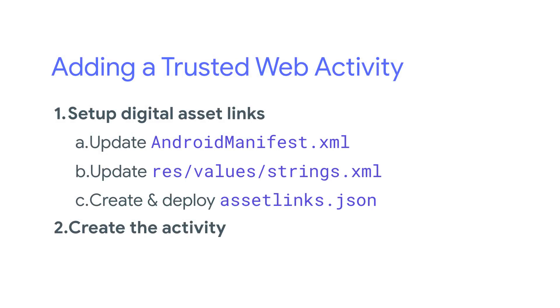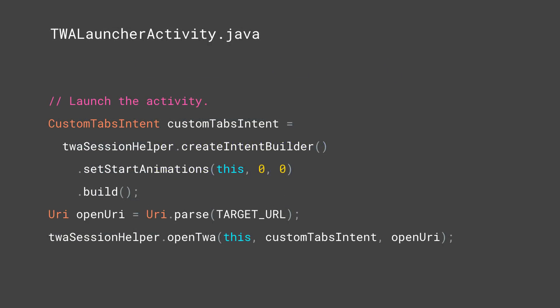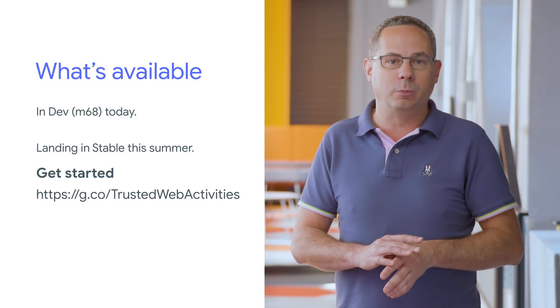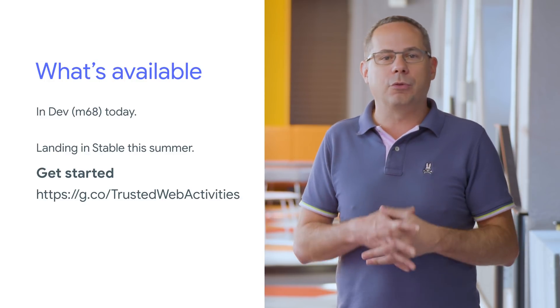We've set up the digital asset links we need. Now we can create the activity. There's a bunch of boilerplate code required to launch the activity, but we're working on adding that to the Android support library so that you won't have to deal with it in the future. Once the boilerplate is complete, you can create the new intent, set the URL, and open the web content in your trusted web activity. Today, this is available on Android in Chrome 68, which is currently Chrome Dev, and we hope to see it land in stable sometime in Q3 of 2018.